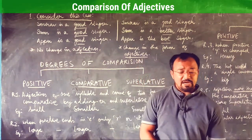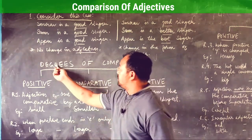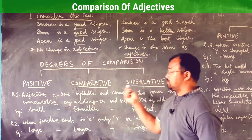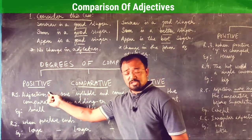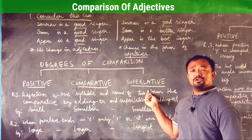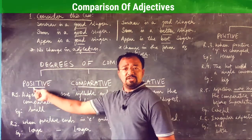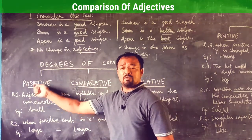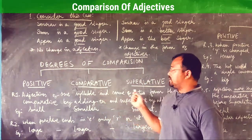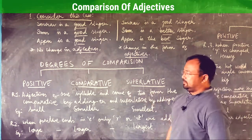I'll explain the rules of the formation of adjectives one by one. There are three degrees of comparison: the first is the positive degree, the second is the comparative degree, and the third is the superlative degree. Positive degree is the first form of the adjective, comparative is the second form, and superlative is the highest form.